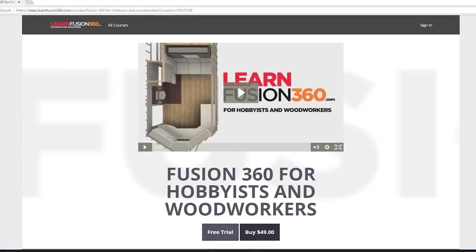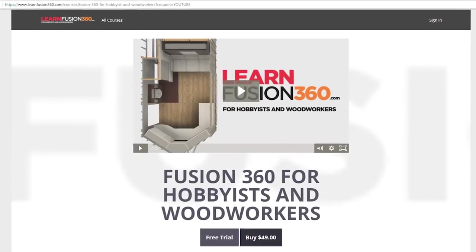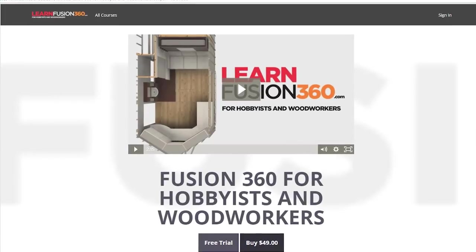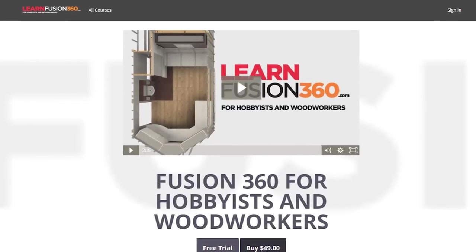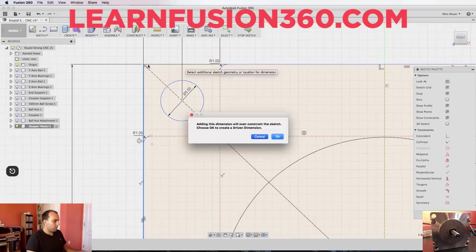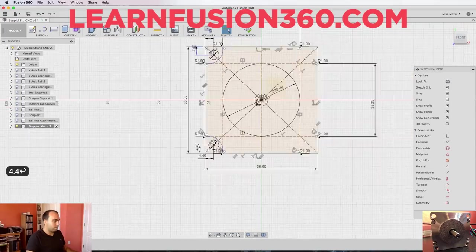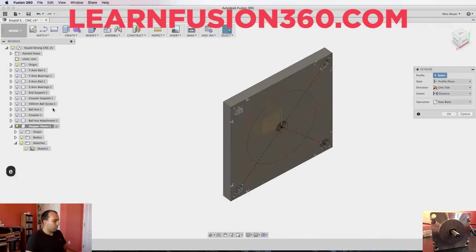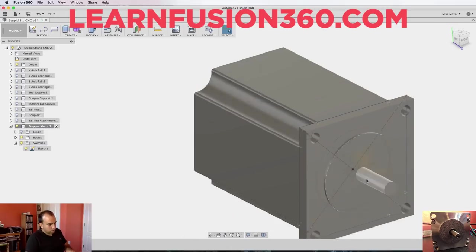If you'd like to learn how to design parts to cut in a CNC machine like this, we sell an 8 hour course called Fusion 360 for hobbyists and woodworkers. I'll leave a link in the description for a $30 off coupon. And in fact you can watch me design this entire machine from the ground up as part of the extra credit section of that course. We'll see you next week.